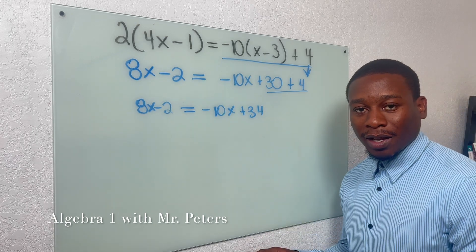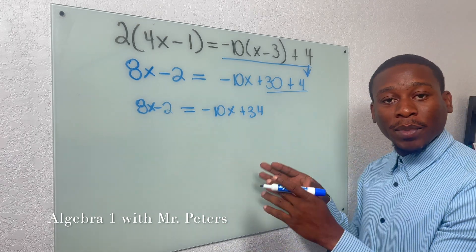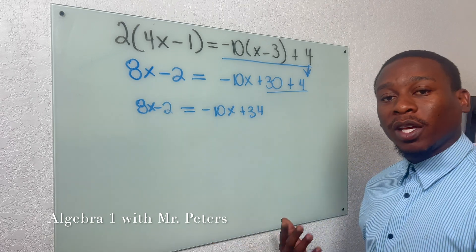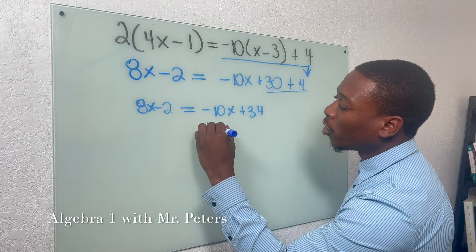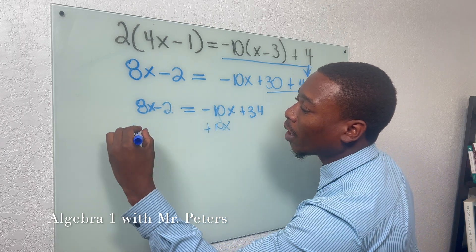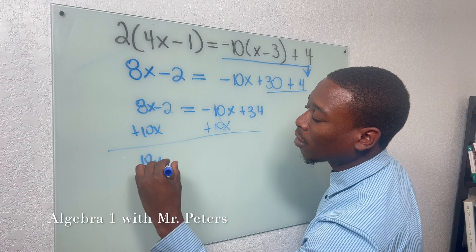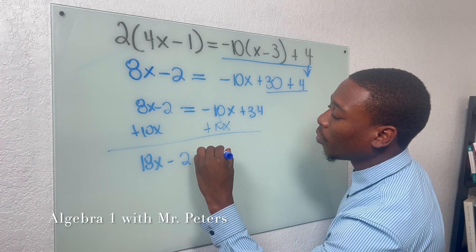Now at this step, when everything is simplified, meaning there's no like terms on the same side of the equation, now let's start moving things on one side to the other. So we're going to add 10x on both sides. Once I do, I'll have 18x minus 2 is equal to 34.